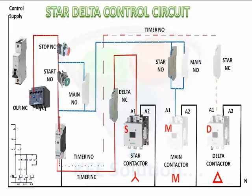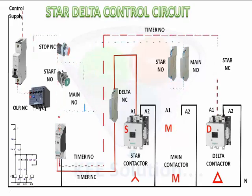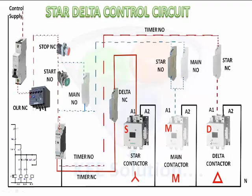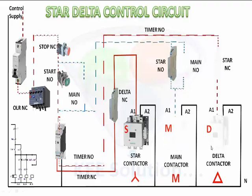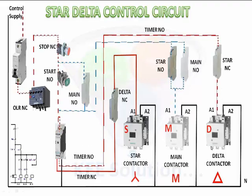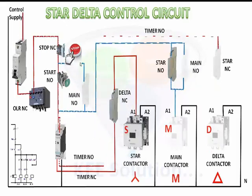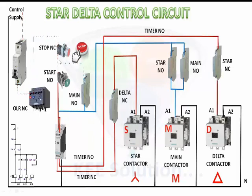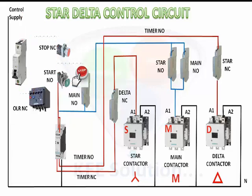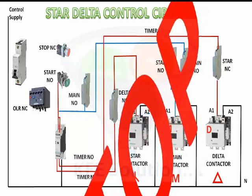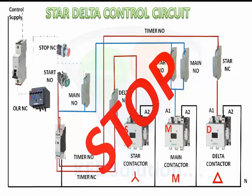In this way the motor will start in delta connection. These are the proper steps for the star delta connection — easy to remember and very safe. The starter is now working in running mode. When we press the stop button, it will cut the main power from the start NO or main contactor and it will completely stop.